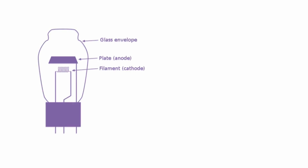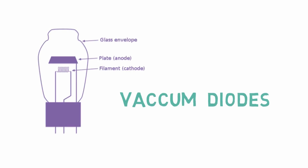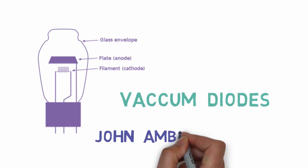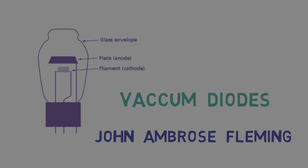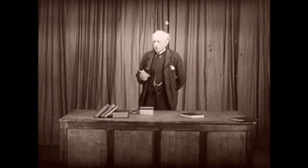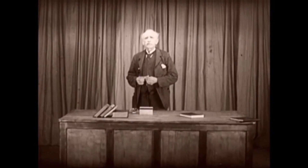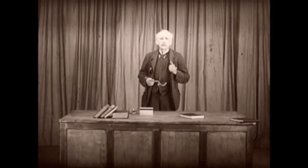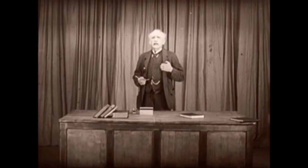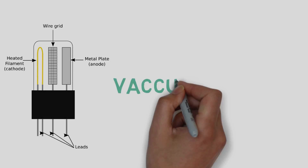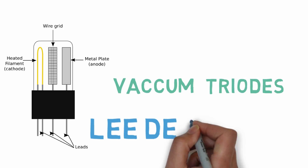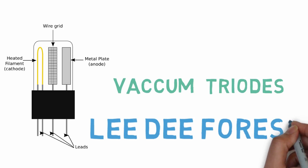Catching up with Edison's observations, the vacuum diode was invented by John Fleming in 1904. In 1906, Lee DeForest invented the vacuum triode, which is a three-element electron tube.